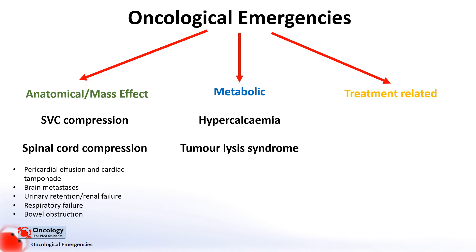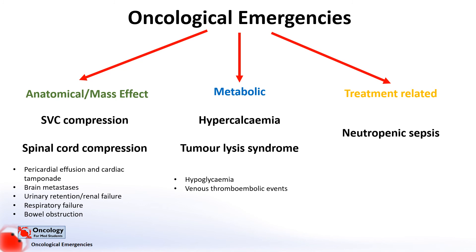Other complications in the metabolic category might include hypoglycemia and venous thromboembolic events, where the metabolic effects of the cancer make the blood more likely to clot. Finally, treatment-related emergencies have to include, first and foremost, neutropenic sepsis. This is where patients whose immune systems are very weak due to the effects of chemotherapy develop an infection, a situation that is life-threatening unless treated very promptly.